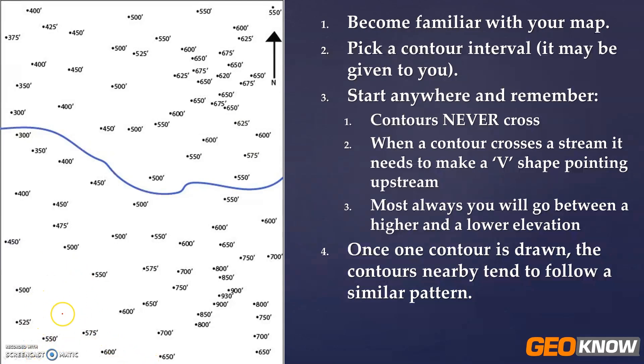Let's start anywhere. Let's just maybe start with our 550. I'm going to draw it off the map because we don't know where it goes that way exactly. Remember you always have to go between a lower and a higher number. In this case a lower number is 525 and a higher number is 575, and 550 fits perfectly between there. So I can come up and hit this other 550.